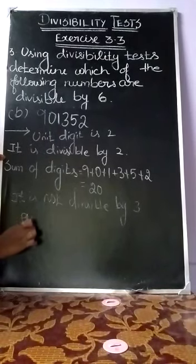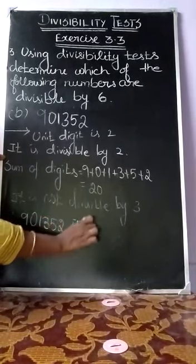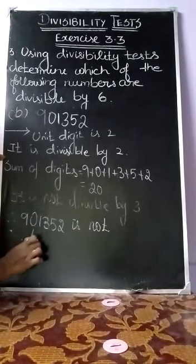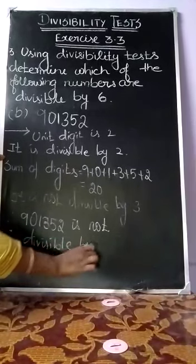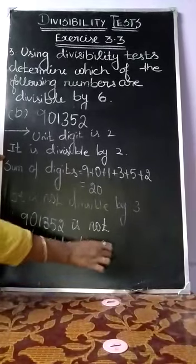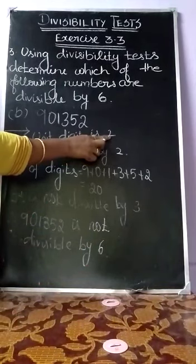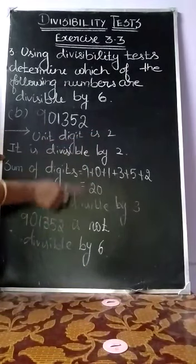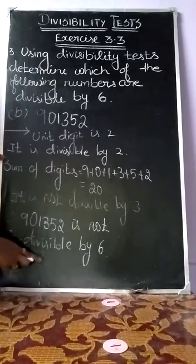Therefore, 901352 is not divisible by 6. Here we have two conditions: first, check divisibility by 2; then check divisibility by 3. If any one condition is not satisfied, the whole value is not divisible by 6.